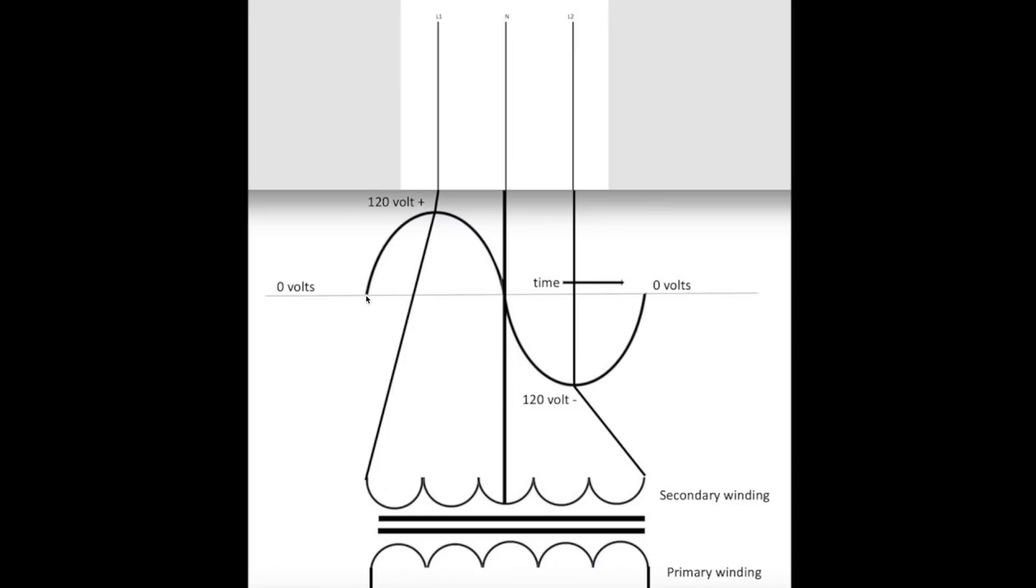But I want you to note, as this power comes up and peaks up here, I'm showing you that this wire coming from this side here, going up to L1, that's at 120 volts at this time. So when I get up here, I have 120 volts to zero.